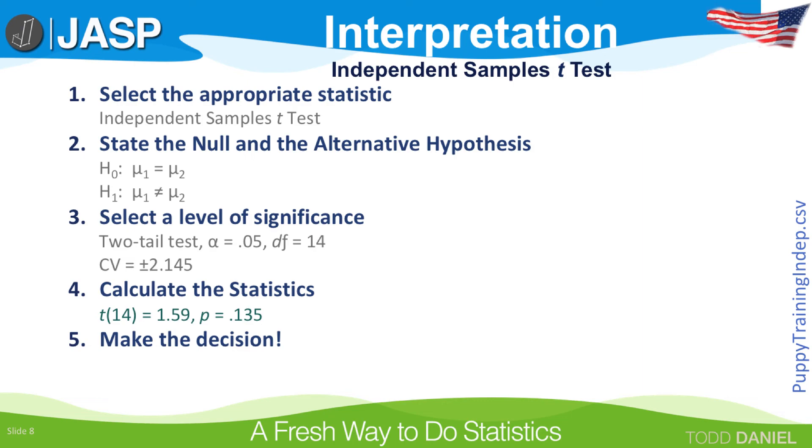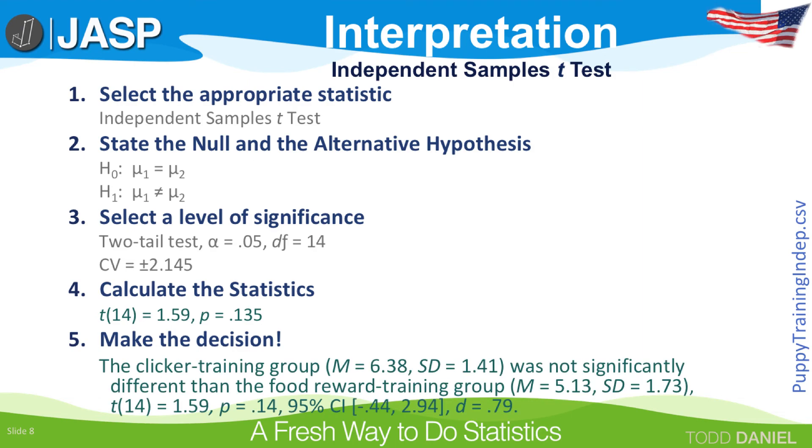Finally, step five, make the decision. The clicker training group was not statistically significantly different than the food reward group. T with 14 degrees of freedom is 1.59, probability is 0.135, non-significant.